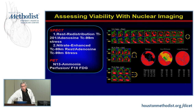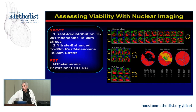In conclusion for nuclear imaging: we use different SPECT protocols and prefer to include some form of stress to look for ischemia as well as viable tissue, using either thallium or nitrate-enhanced technetium techniques. PET remains the gold standard in nuclear cardiac imaging for identifying myocardial viability.